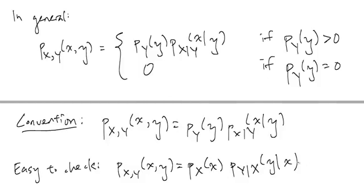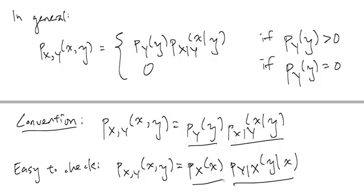An important thing here for both of these is that we are writing the joint distribution as the product of two factors. Later on in the course, we will see a lot more examples of where we are writing a joint in terms of some kind of factorization.